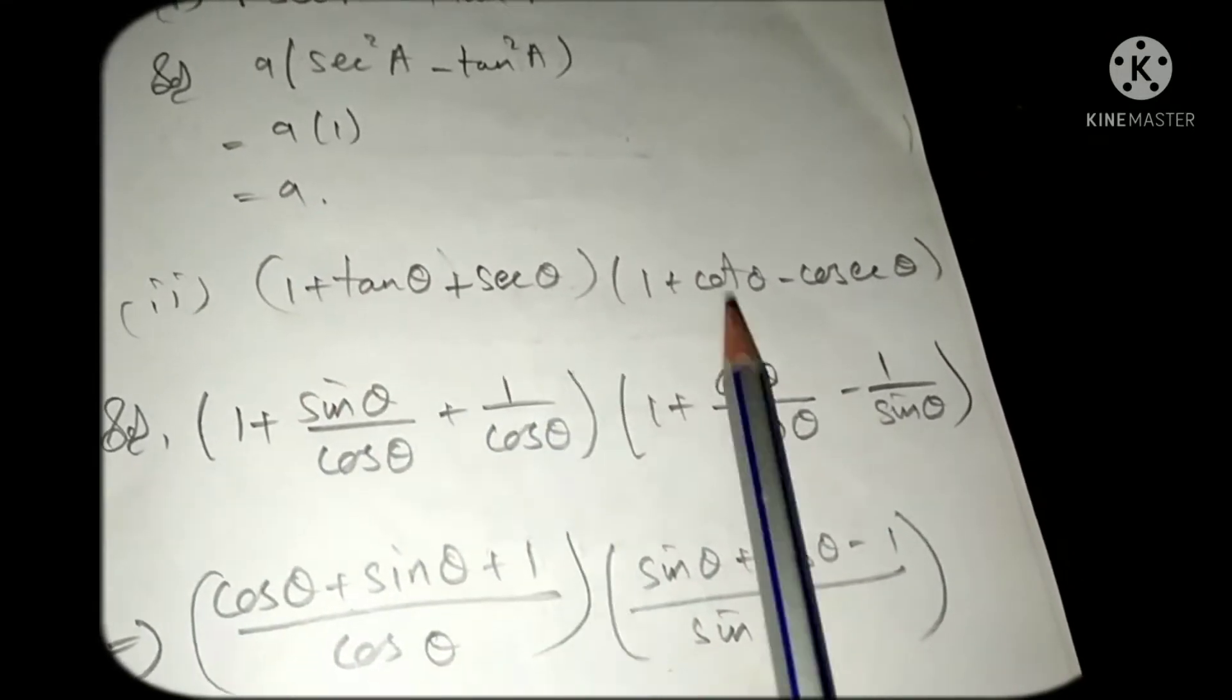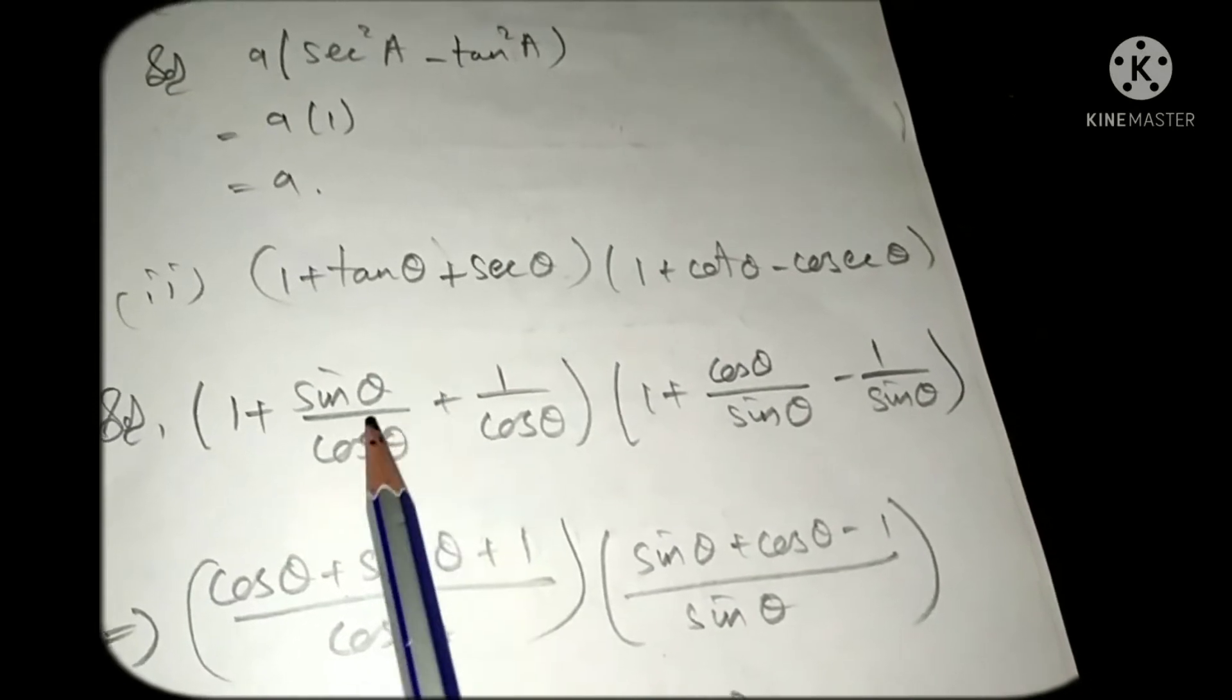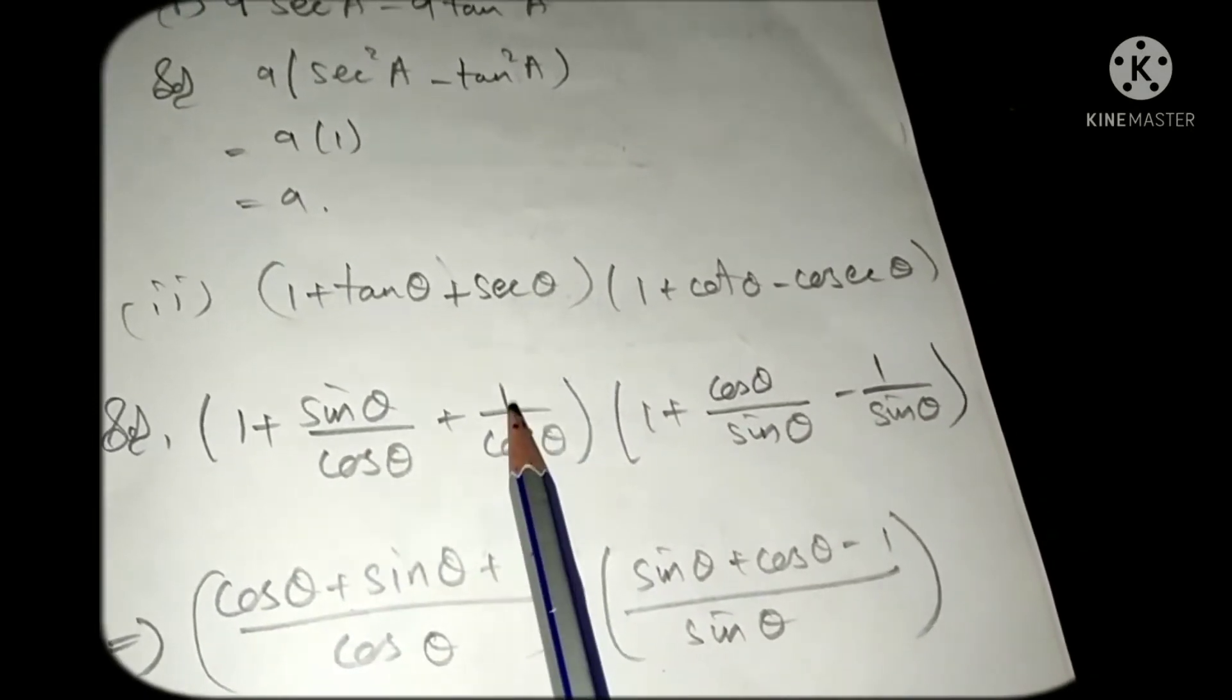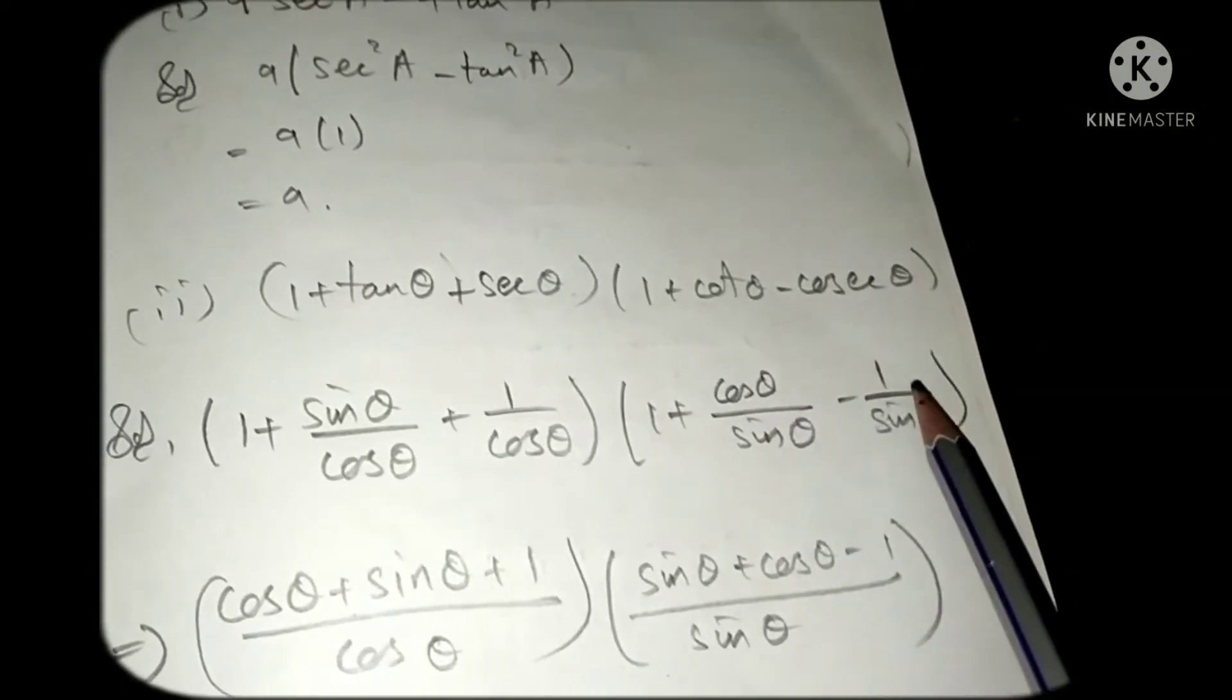Now second problem is (1 + tan θ + sec θ)/(1 + cot θ - csc θ). Here we can write tan as sin θ/cos θ and secant as 1/cos θ, cot as cos θ/sin θ and cosecant as 1/sin θ by using the formulas.